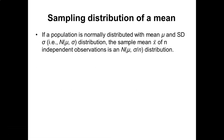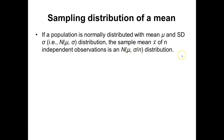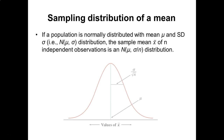This brings us to the concept of the sampling distribution. If a population is normally distributed with mean mu and standard deviation sigma, the sample mean x-bar of n independent observations is represented with mean mu and standard deviation sigma divided by the square root of n. Imagine all the values of x-bar on the x-axis — the mean of those values would be mu and the variability would be sigma divided by the square root of n, which we call the standard error.